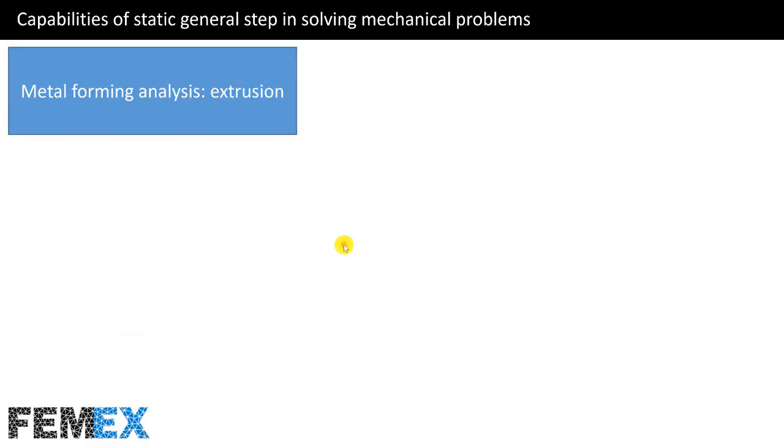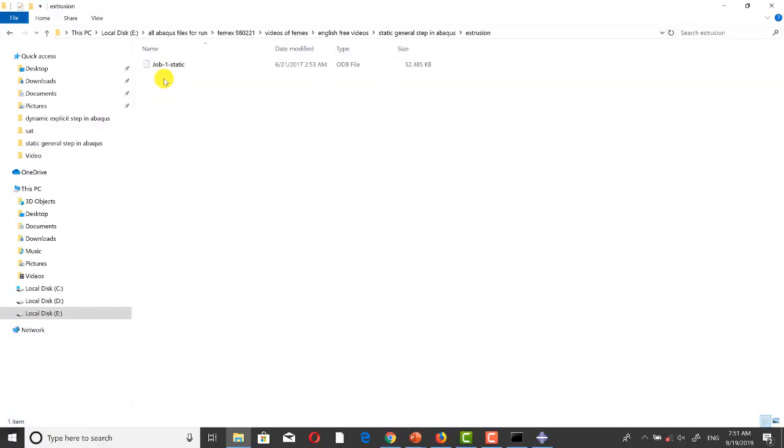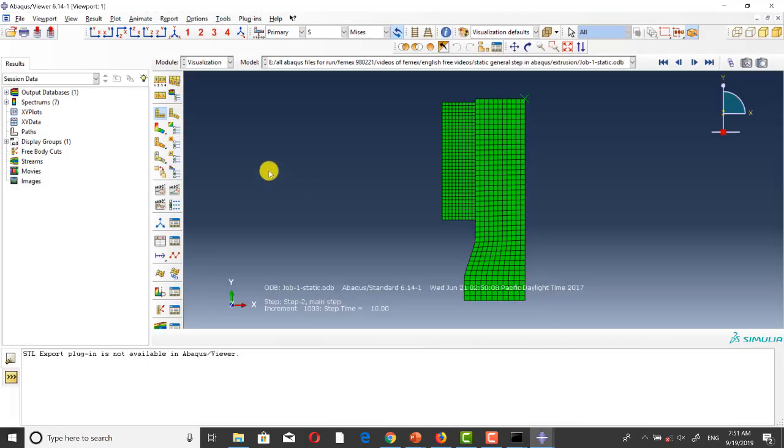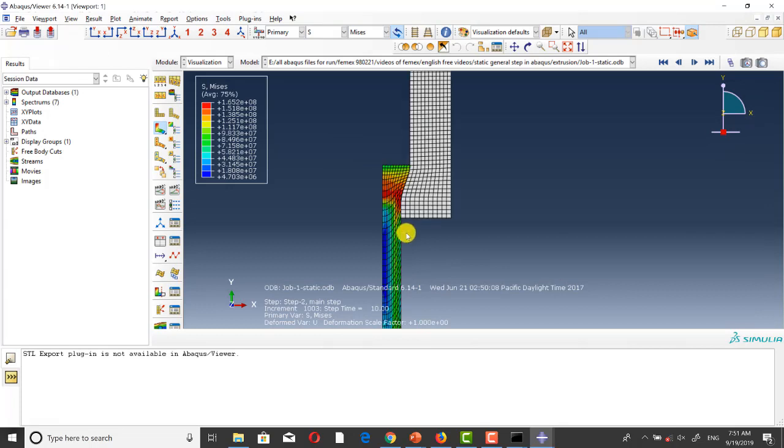The second example is the extrusion process that is a bulk forming process. There is an axis of symmetry in the geometry of extrusion process. So I have modeled this process in the axisymmetric space.